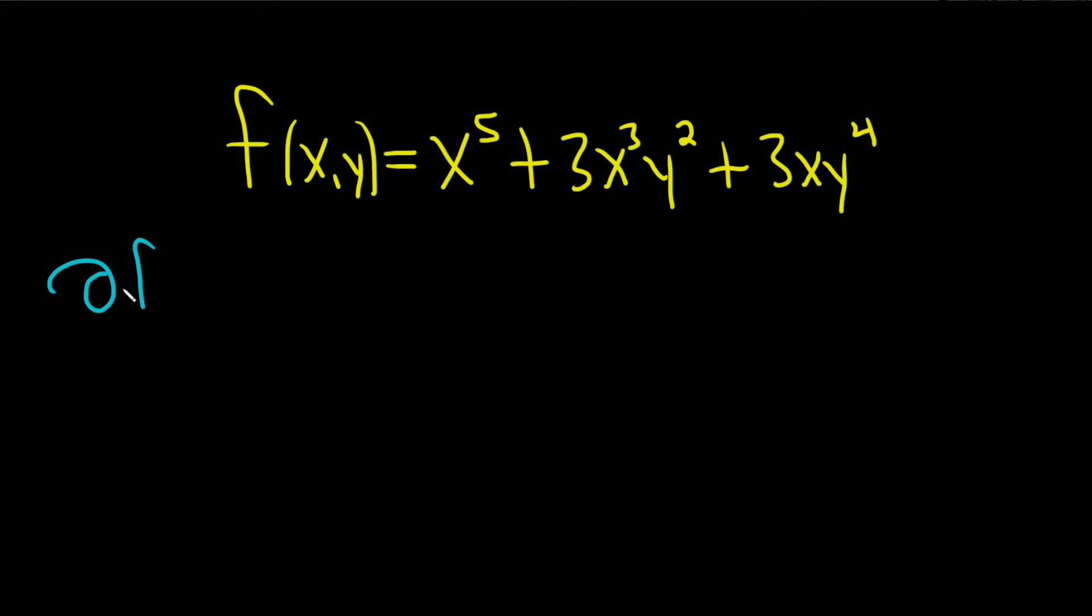Let's do ∂f/∂x first. When you're finding the partial with respect to x, all of the other variables are constants. So in this case, all of our y's are constants. So they just hang out and we just differentiate the x.